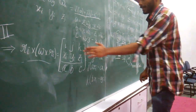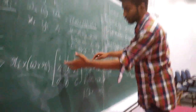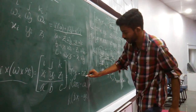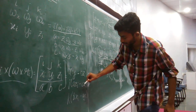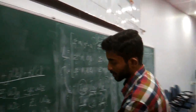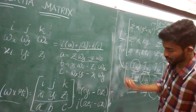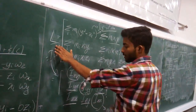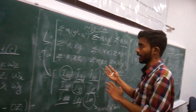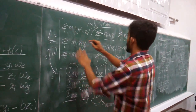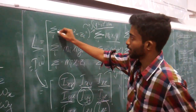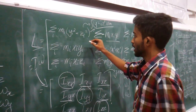Taking the determinant of this matrix, we get: i·(c·y_i - b·z_i) + j·(a·z_i - c·x_i) + k·(b·x_i - a·y_i). Substituting a, b, c from the above equations, taking out ω_x, ω_y, and ω_z, and transforming back to matrix notation, we get a 3×3 matrix multiplied by (ω_x, ω_y, ω_z), where the diagonal element is Σ m_i × (y_i² + z_i²).